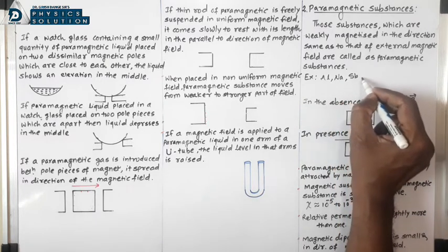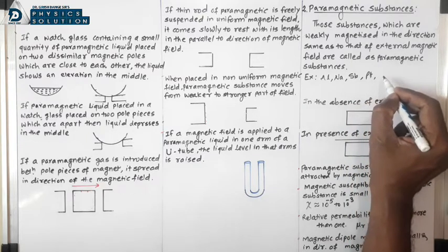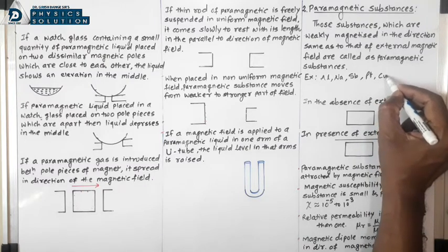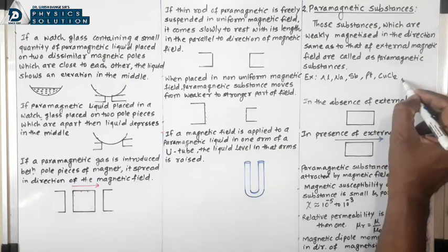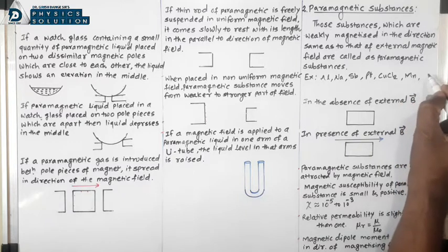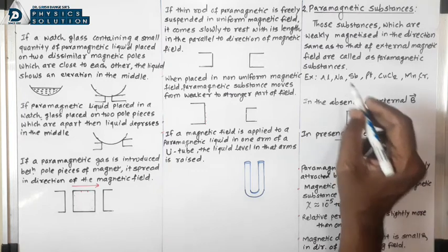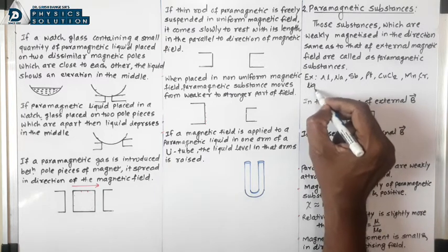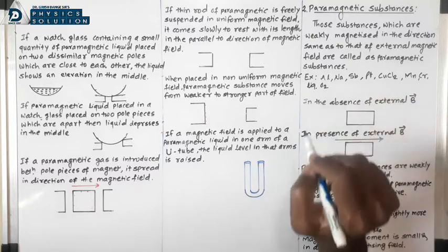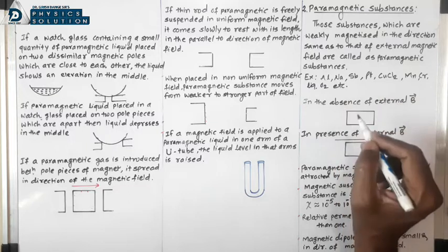Further examples of paramagnetic substances include platinum (Pt), copper chloride (CuCl₂), manganese, chromium (Cr), and liquid oxygen (O₂). These are some examples of paramagnetic substances.